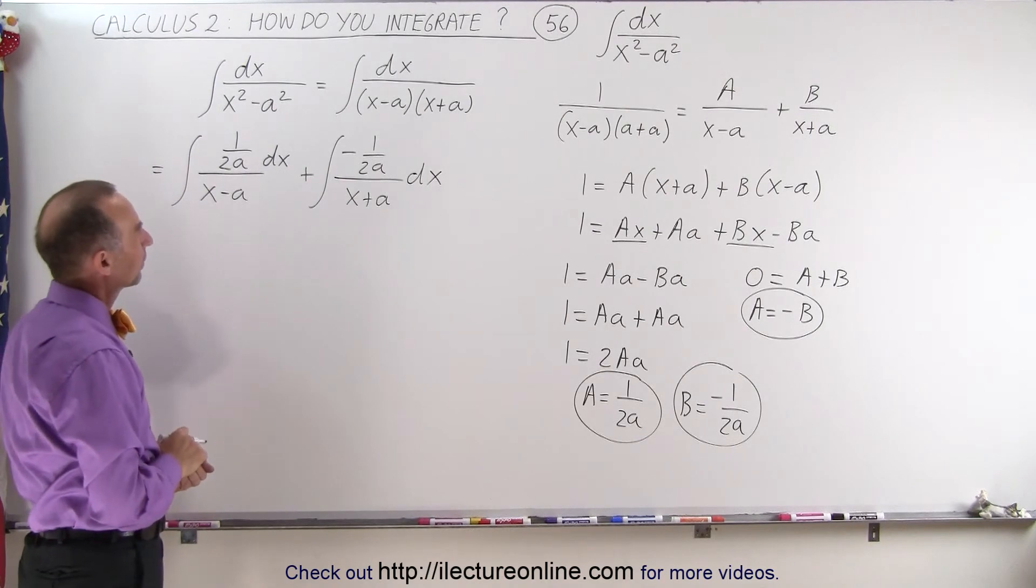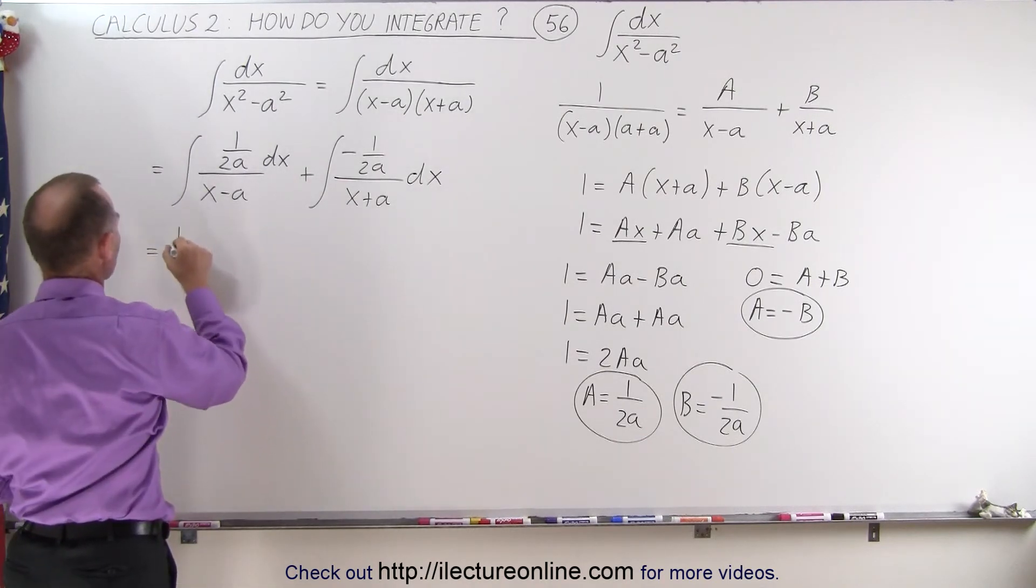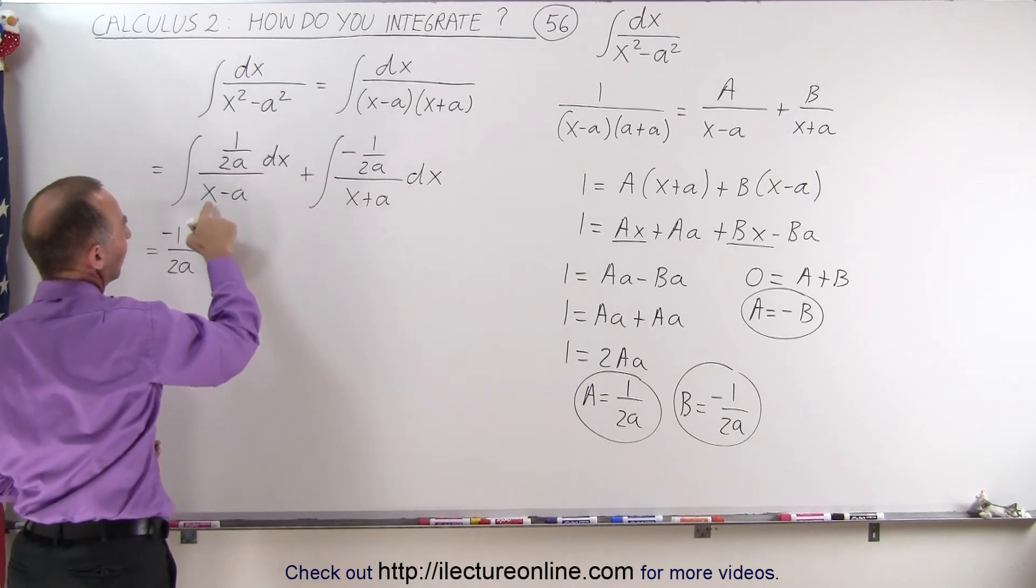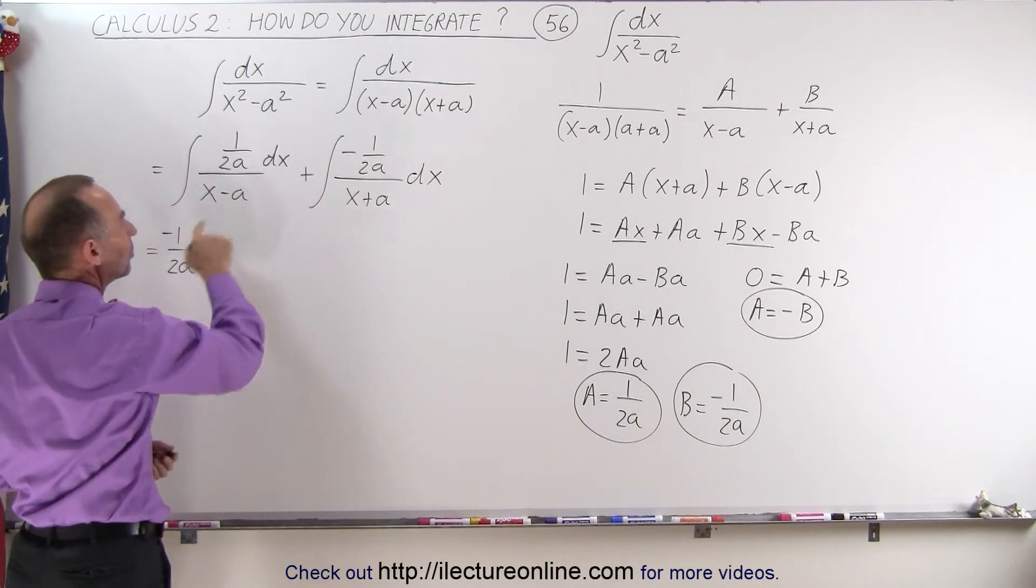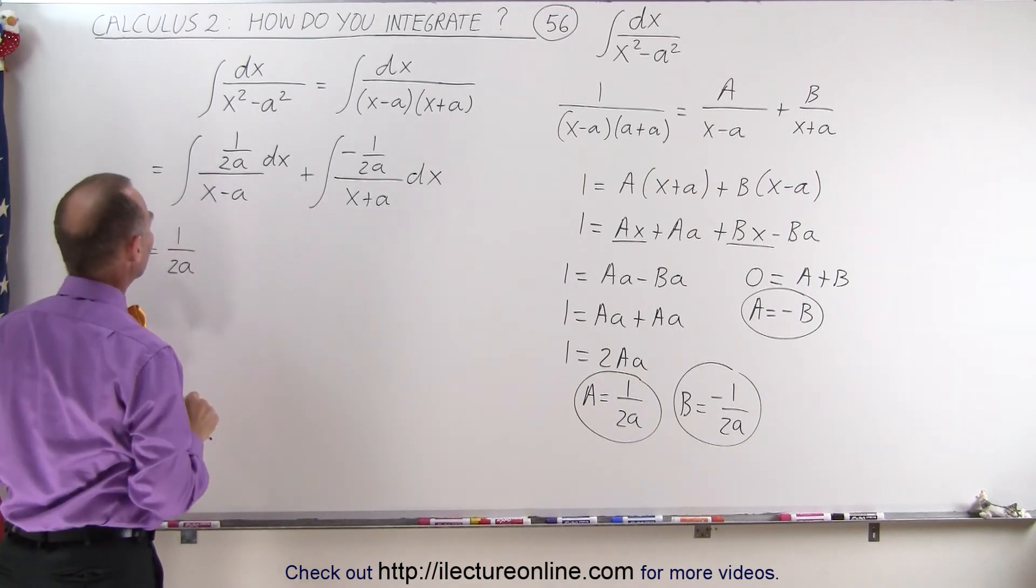Okay, so now let's pull out a 1 over 2a. And actually, I'm going to pull out a negative 1 over 2a. That makes this negative and this positive because I have an x minus a. Oh no, I don't need that. So I don't need to pull out a minus 1. We can leave it as such.